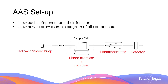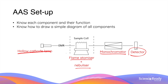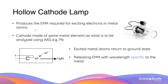We have now discussed the underlying principle of AAS. Now it's time to talk through the various components of an AAS setup and their functions. This includes a hollow cathode lamp, a flame atomiser and nebuliser, a monochromator, and finally a detector that receives the EMR.